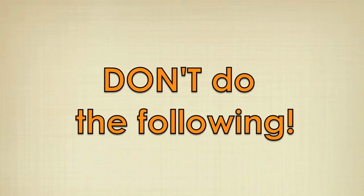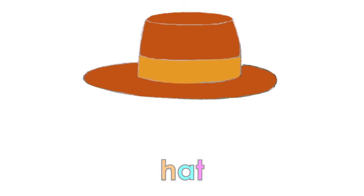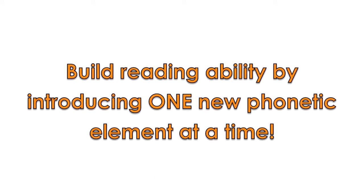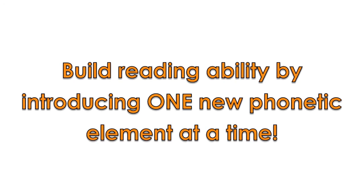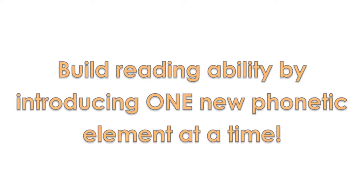Let's look at an example of what not to do. If you've just finished teaching CVC words like 'hat' and 'cup' and want to introduce consonant blends to students, don't select words that have phonetic elements other than the short consonant and vowel sounds and the blends you want students to focus on. If, after an introduction to consonant blends, you show a student the word 'bread' without a picture, that student will not be able to read the word and become discouraged.